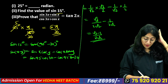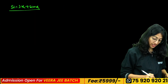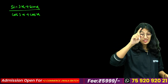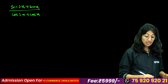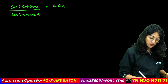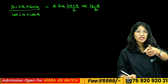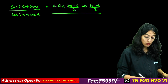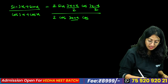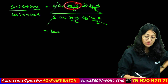Simplify (sin 3x + sin x)/(cos 3x + cos x). Using sum-to-product formulas: sin x + sin y = 2 sin((x+y)/2) cos((x–y)/2), and cos x + cos y = 2 cos((x+y)/2) cos((x–y)/2). Applying these: numerator = 2 sin(2x) cos(x), denominator = 2 cos(2x) cos(x). The cos(x) and 2 cancel, leaving sin(2x)/cos(2x) = tan 2x.